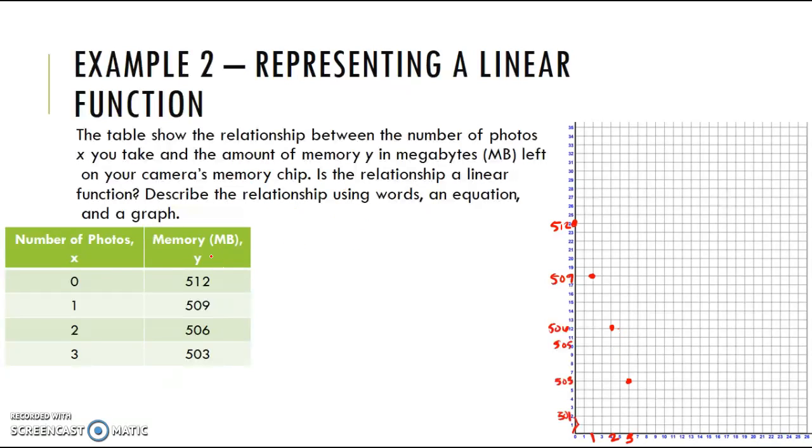So I'm going to say it's a linear function. If you want to find another way to be absolutely sure, if I take 512 minus 509, we get three. 509 minus 506 gives us three, and 506 minus 503 gives us three. That's constant, and because that difference is constant, then I know this is, yes indeed, a linear function.